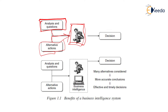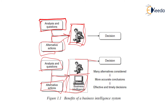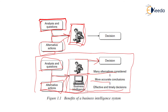Now the second scenario is where we apply business intelligence. The same analysis and questionnaire are there, and alternative actions are also present. But now when we send the data to the decision maker, the decision maker also has a business intelligence tool. With its help, the decision maker can consider many alternatives, and because of that we get a decision which is more accurate, effective, and timely.